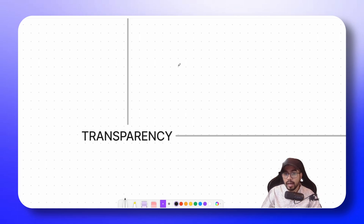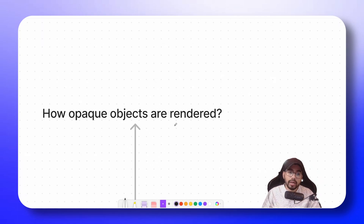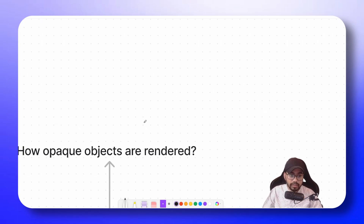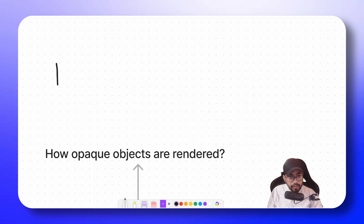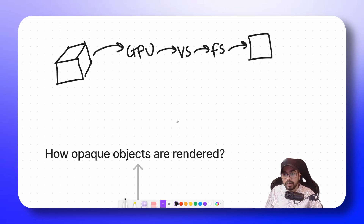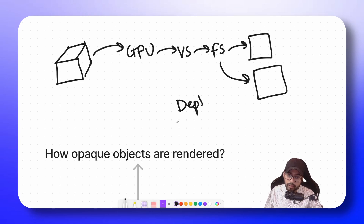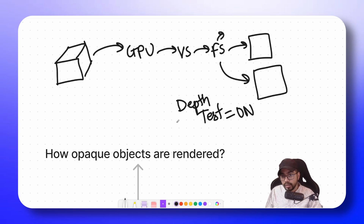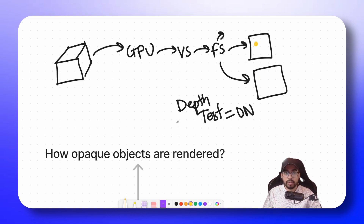Before we understand transparency, let us recap how opaque objects are rendered. If you take a look at the depth buffer video, you will understand how opaque objects are rendered. Whenever you have any 3D model, its data is sent over to the GPU, then to the vertex shader, then the fragment shader, and then it comes on the screen. While writing this fragment color to the screen, if the depth test is on, we check the depth value of this fragment. If the depth value is higher than the existing depth value at that point, it means that fragment is behind and we don't draw it. If it is in front, we draw it. This is how 3D objects are drawn with the depth buffer test.